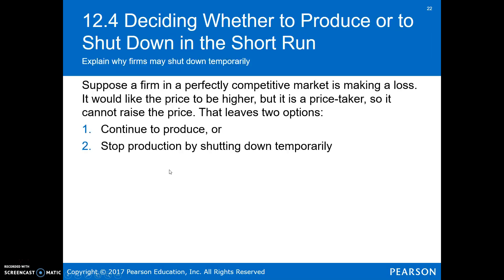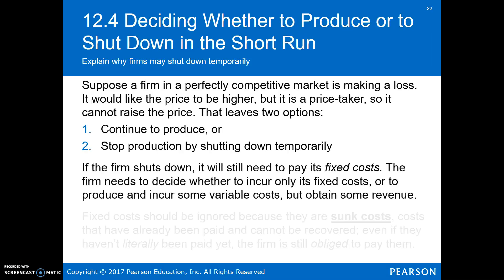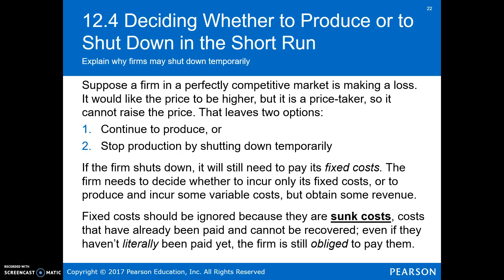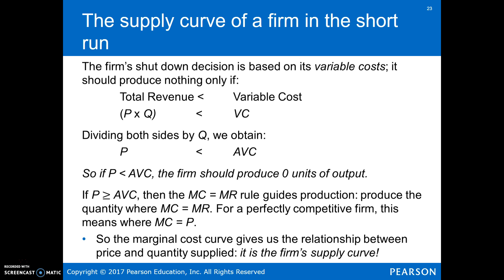Just because a firm is making a loss doesn't mean it's going to shut down. If it's making a loss, it could continue to produce or it could stop production by shutting down temporarily. If it shuts down, it still has to pay its fixed costs — those are costs the firm has to pay no matter how much it produces. So we're going to ignore sunk costs — the fixed costs are sunk because they have to be paid no matter what, even if the firm doesn't produce. The shutdown decision is dependent on our average variable costs, since we can have some control over variable costs but not fixed costs. The relationship between the price line and the average variable cost determines whether a firm actually produces or shuts down.